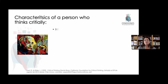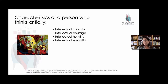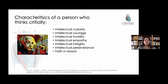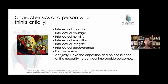Paul and Elder brought this all together when they looked at the characteristics of a person who thinks critically. They're intellectually curious, they have intellectual courage, intellectual humility, intellectual empathy, intellectual integrity, intellectual perseverance — they don't give up. And they have faith in reason, which seems kind of contradictory, but they figure that if you follow this path and done the process correctly, whatever you come up with is likely true, even if it goes against what you might have believed initially. And that you act justly — you decide that now that you've gone through this process and come to some conclusions, you should take the steps to rectify something, fix it, or be bold and try to change things.